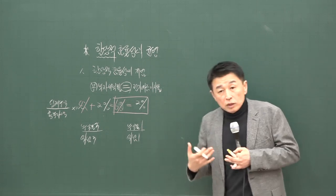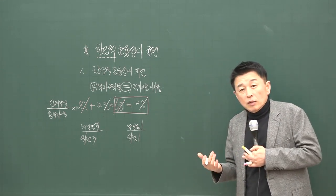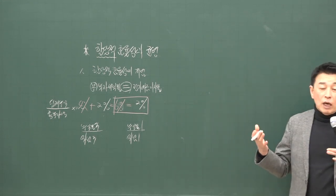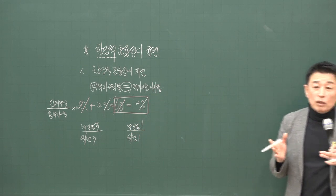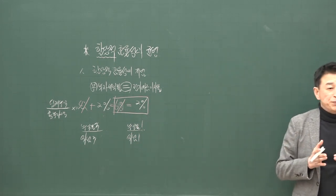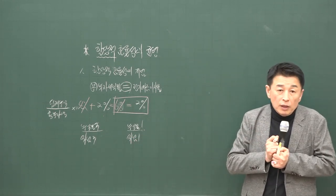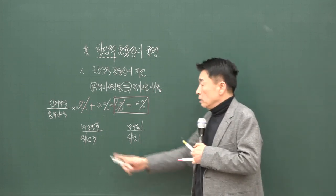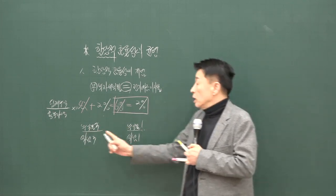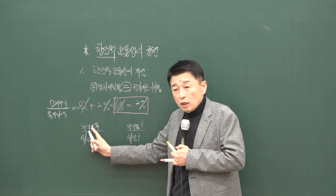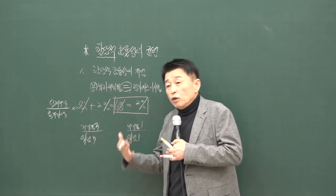투자자가 어느 시장에 투자할 것이냐는 것은 위험에 대한 투자자의 태도에 따라 달라져요. 위험중립적인 투자자는 가늘고 길게 살자는 주의로 안전한 것만 선택하는 사람이에요. 부동산 투자에서 가장 합리적인 투자자는 위험 회피적인 투자자로, 기대수익이 동일한 두 투자안이 있으면 위험이 작은 걸 선택합니다. 그 사람은 감수해야 될 위험에 대해서는 반드시 대가를 요구하는 사람이에요.